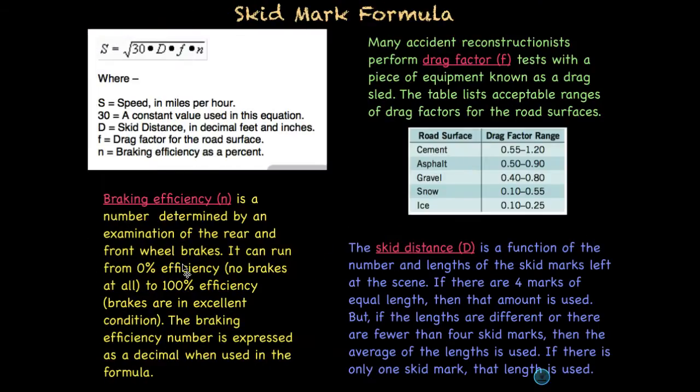Let's start with the skid mark formula. Here it is. It's actually really quite simple. S represents the speed of the car. And we can determine the speed of the car when we take the square root of 30. And 30 is a constant value that has been determined through various tests. So we take 30 times d, which is our skid distance, so that's when we measure our skid distance. And then times the drag factor, which is f, you can think of that as friction.